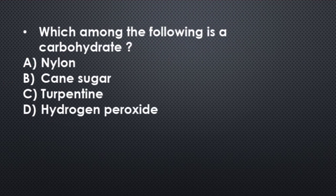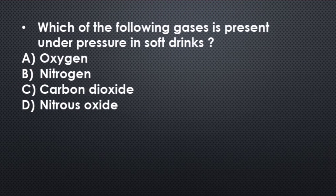Now next, which among the following is carbohydrate? Nylon, cane sugar, turpentine, hydrogen peroxide. Its correct answer is option B, cane sugar.